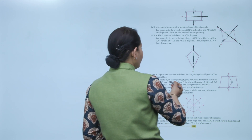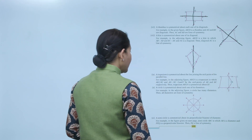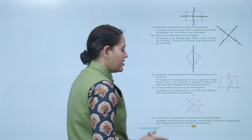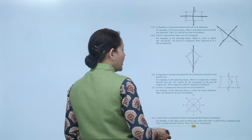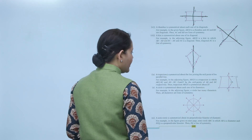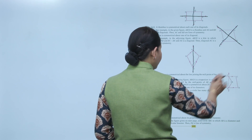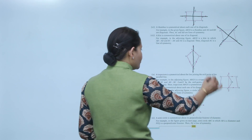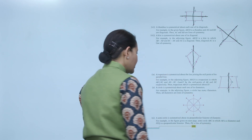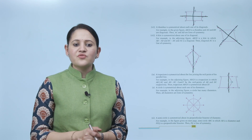For example, ABCD is a trapezium in which AB is parallel to CD — one pair of parallel lines — and AD equals BC. E is the midpoint of AB and F is the midpoint of DC. So EF is the line of symmetry for the given trapezium.